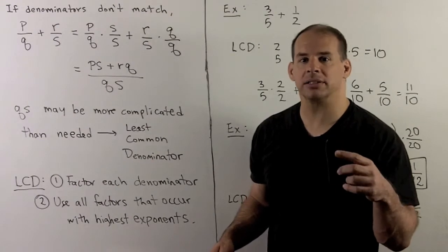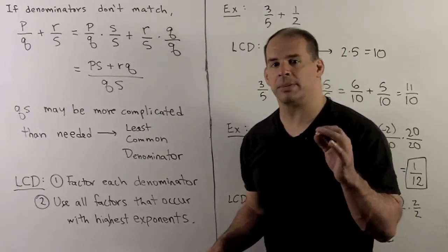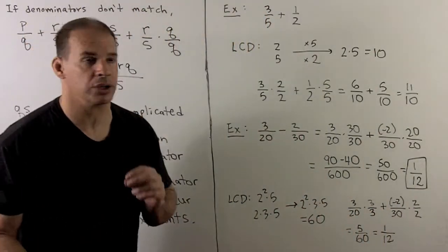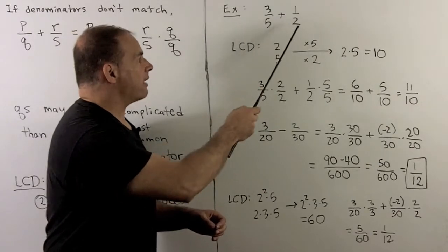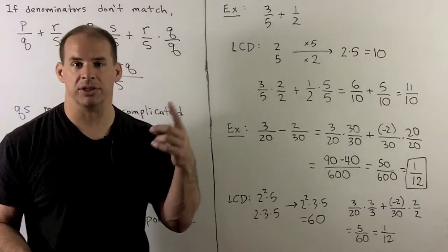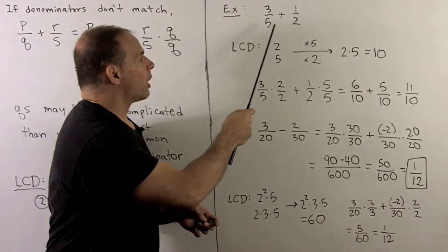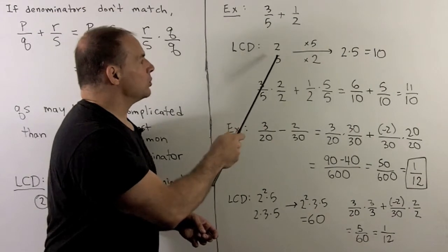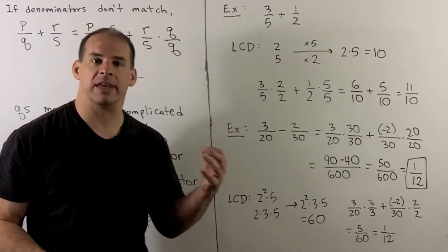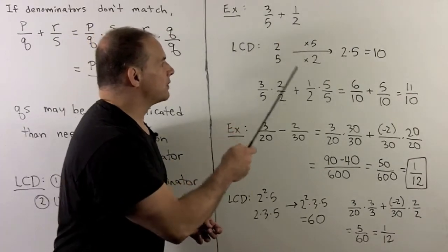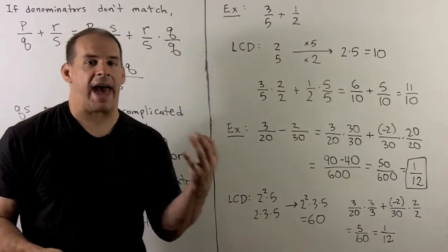The least common denominator gives us the least number of factors to reach a common denominator. The procedure for finding it is the opposite of greatest common factor: take each denominator, factor them completely, then use every factor that appears. For each factor, use the highest exponent that appears; that product is the least common denominator. For example, with 3/5 plus 1/2, the factors are 2 and 5, each with exponent 1, so the least common denominator is 2 times 5, which equals 10.